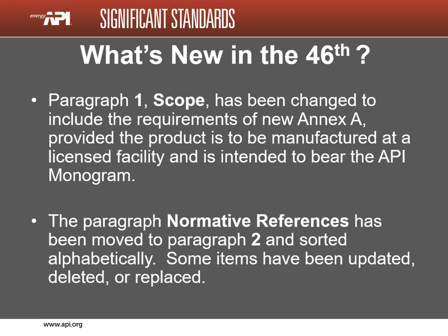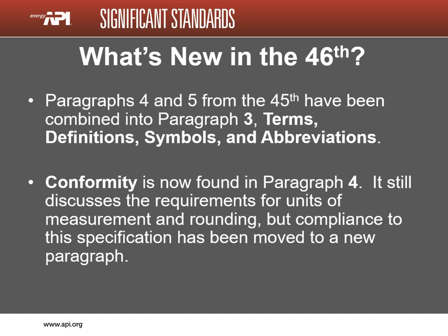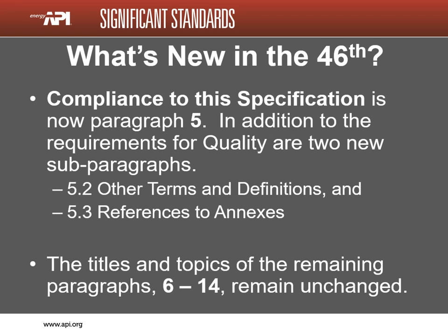The topics in paragraphs 1 through 5 have minor changes. The scope now includes the requirements of new Annex A, provided the product is to be manufactured in an API licensed facility with the intent to bear the monogram. The paragraph on normative references has been moved, revised, and re-sorted by title. All the terms, definitions, symbols, and abbreviations have been combined into paragraph 3, and conformity is now found in paragraph 4. Compliance to the specification is now in new paragraph 5, which contains two new subparagraphs: other terms and definitions, and references to annexes. The titles and topics of the remaining paragraphs 6 through 14 remain unchanged.